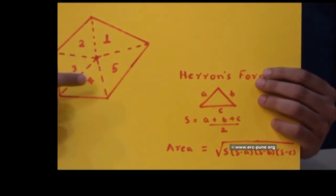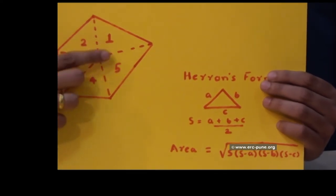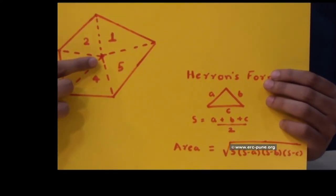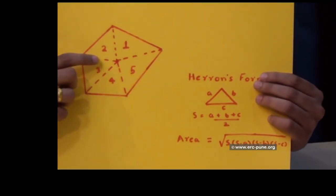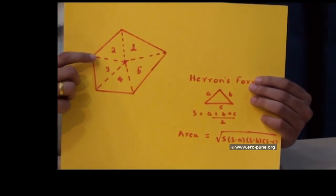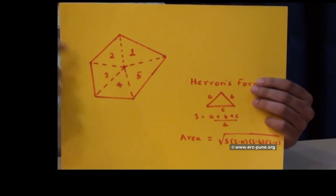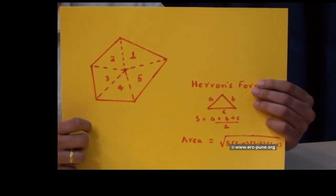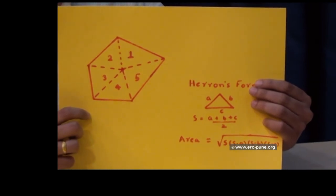So you can use this formula for each of these five triangles and then add all these areas to get the area of irregular pentagon. So you have to repeat this process for each face of the polyhedron and the summation at the end will give you surface area of the polyhedron.